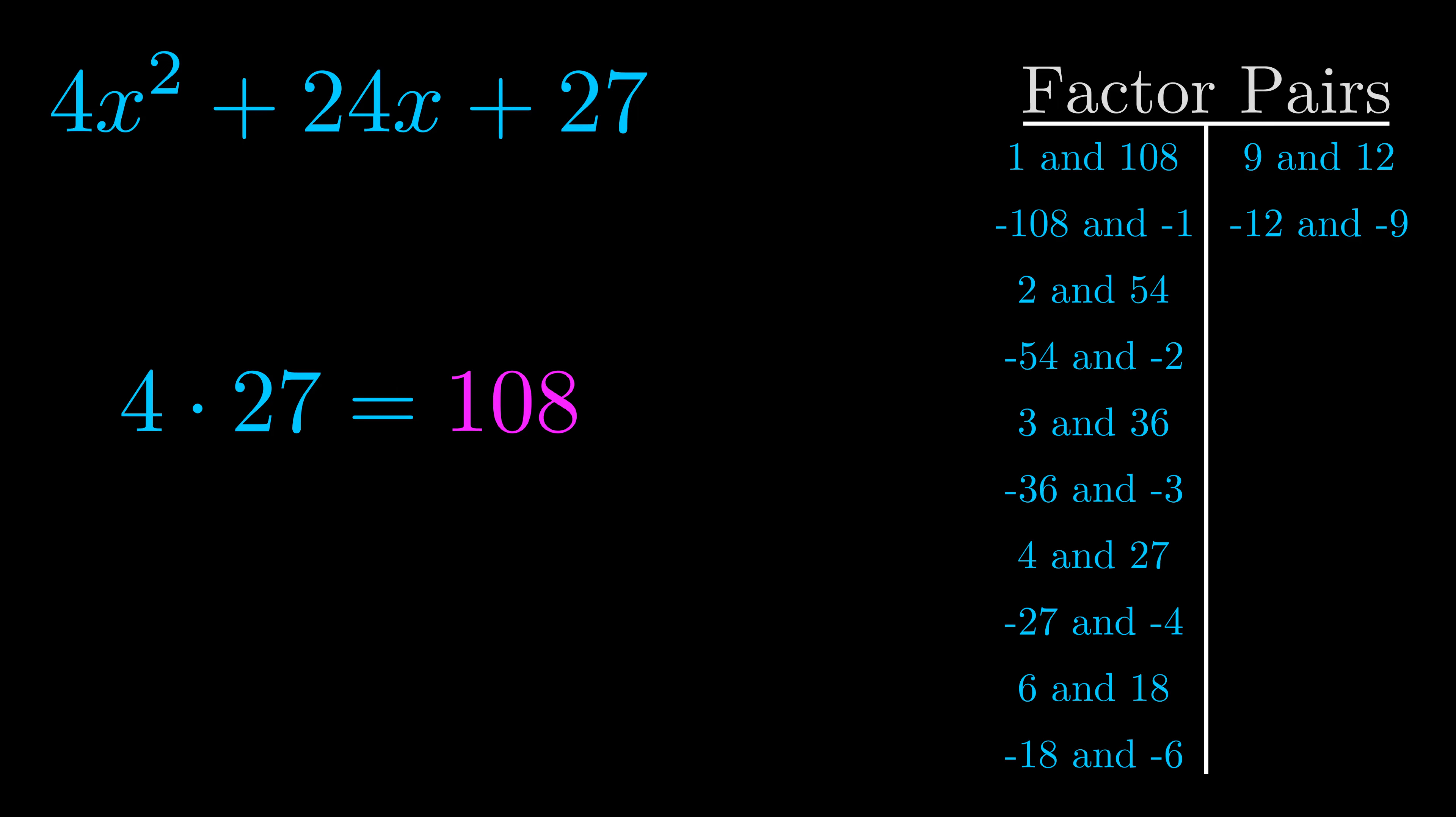Now once you have these factor pairs, the goal is to find which of these pairs adds to the b value. The b value is the coefficient on the x term.